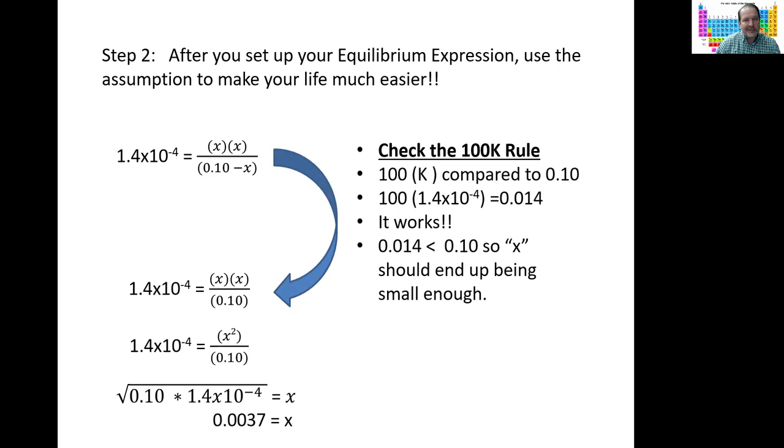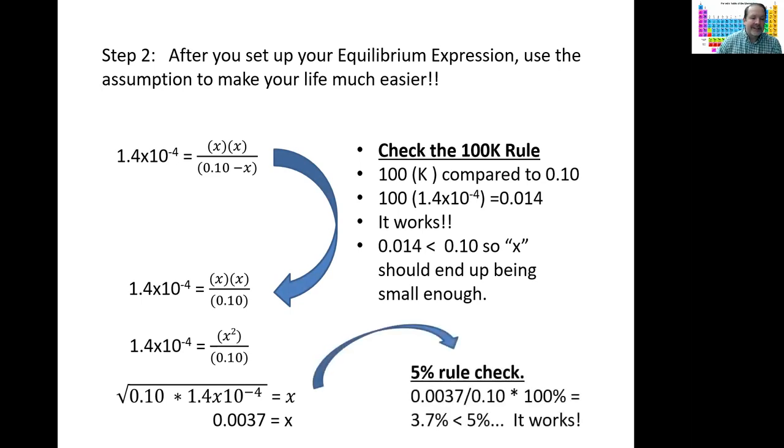Let's check it with the 5% rule to see if this was okay to do. 0.0037 divided by original 0.10 multiplied by 100%. Yep, 3.7%. That's less than 5%. This works.